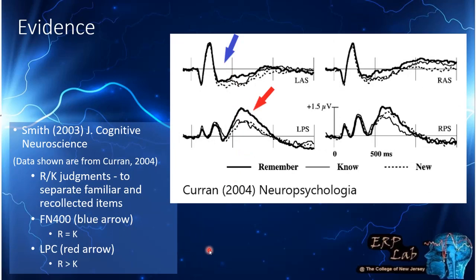Another example uses R/K judgments. Using data from Curran's 2004 paper, both R-ERPs and K-ERPs were more positive than new in the FN400 window. But in the LPC window, R responses were more positive than both K and new — very similar to the dissociation seen before, associating recollection with the LPC and familiarity with the FN400.